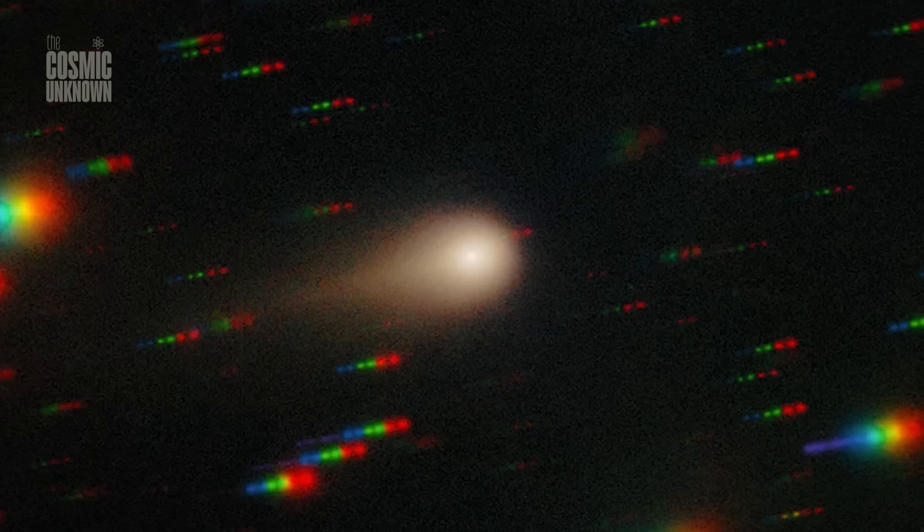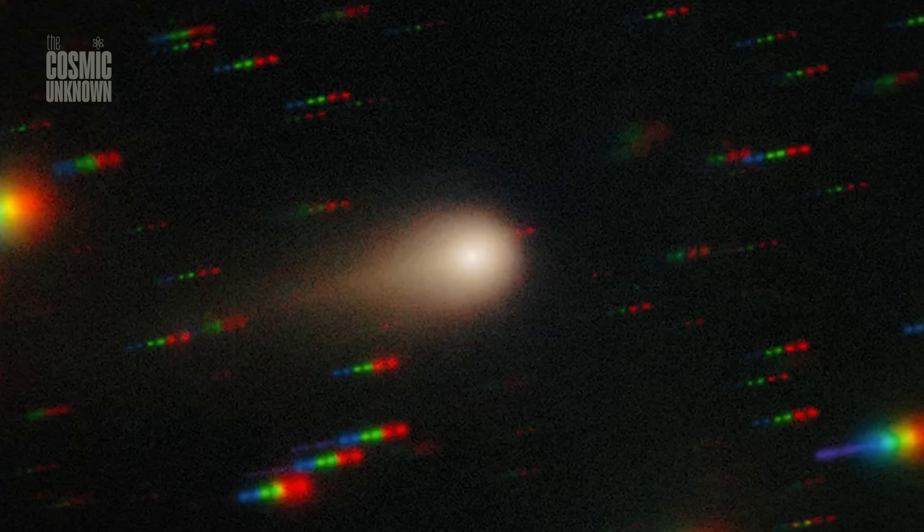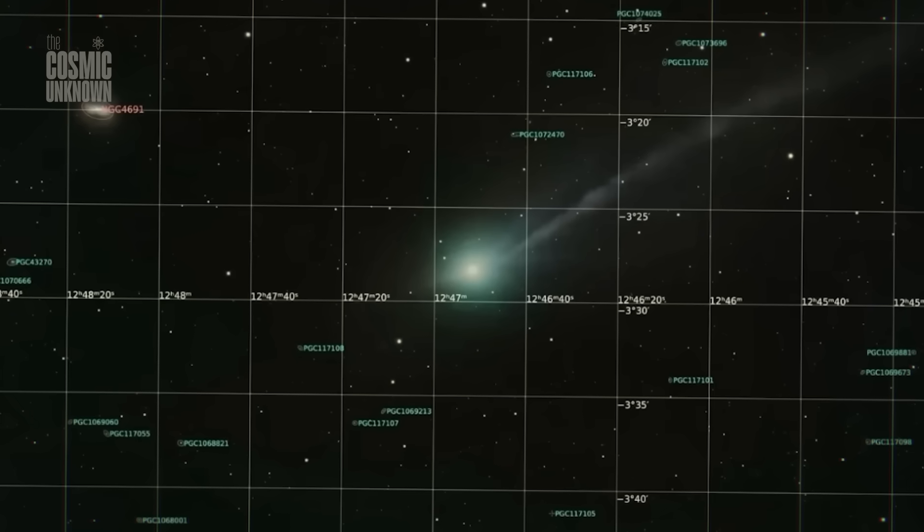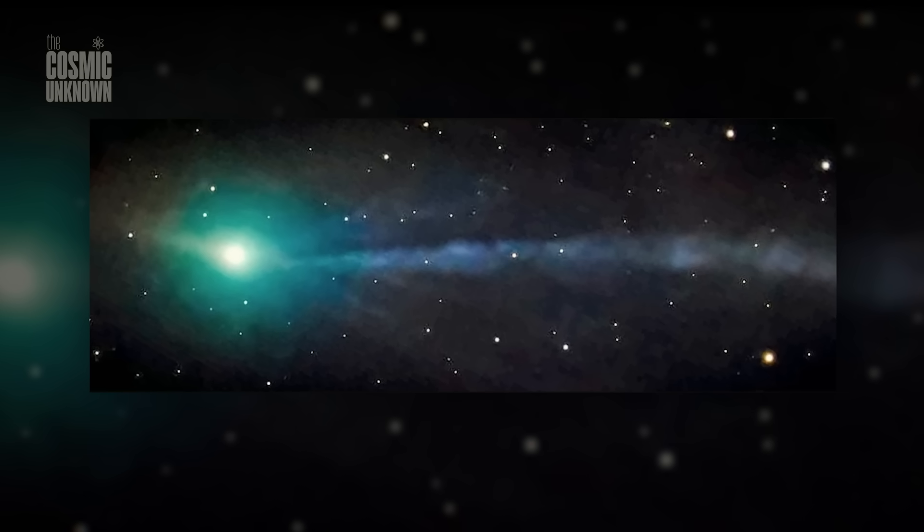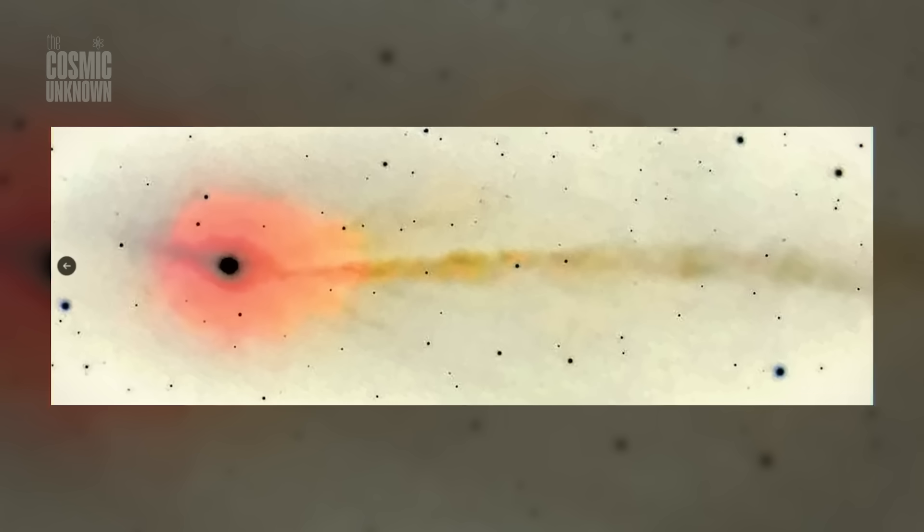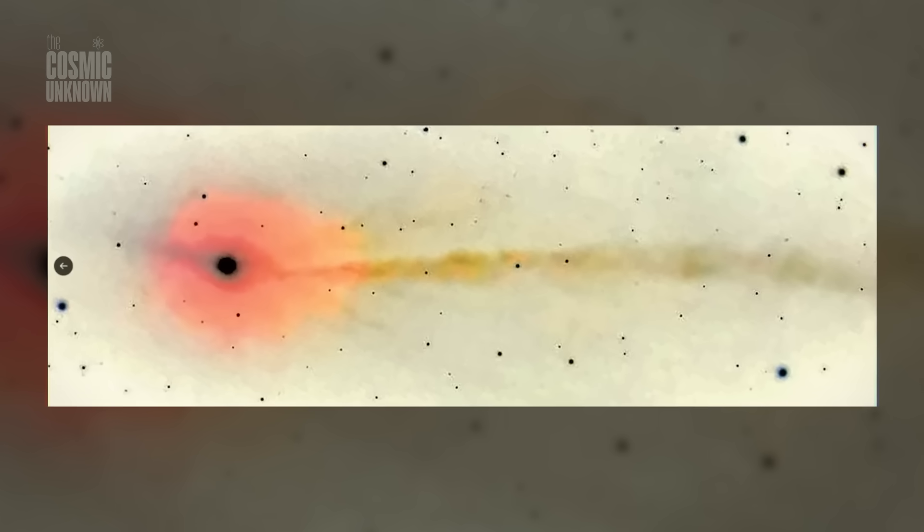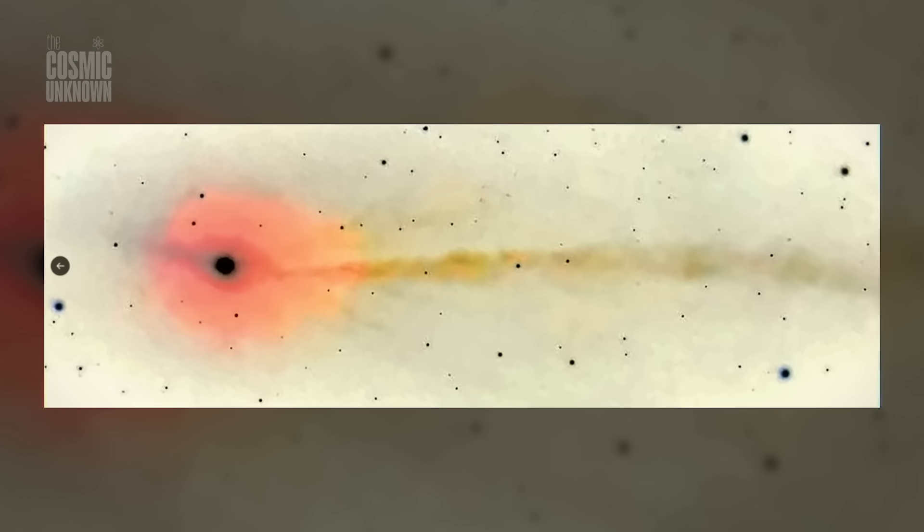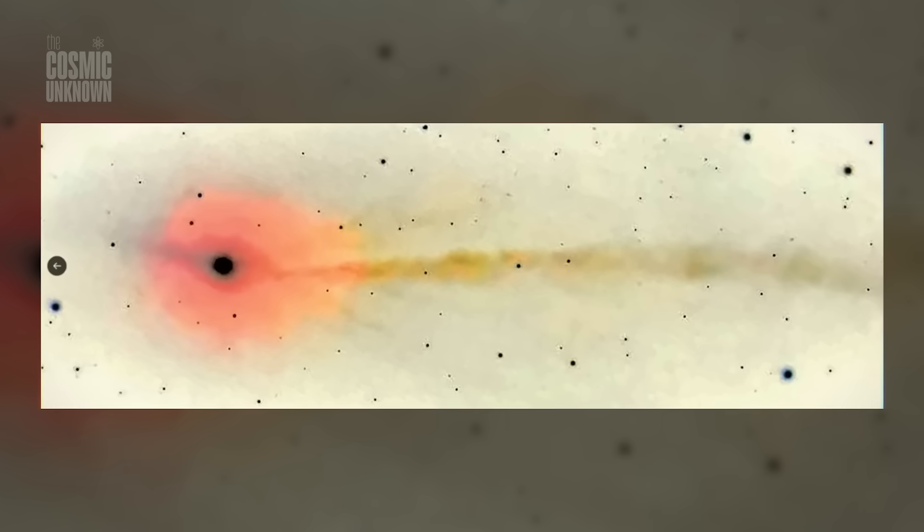3i Atlas has been moving across the sky for a while now, coming from who knows where, and every new image gives us a slightly different piece of the story. But this one stands out because it finally shows the object in a way we can actually see and understand without guessing too much.